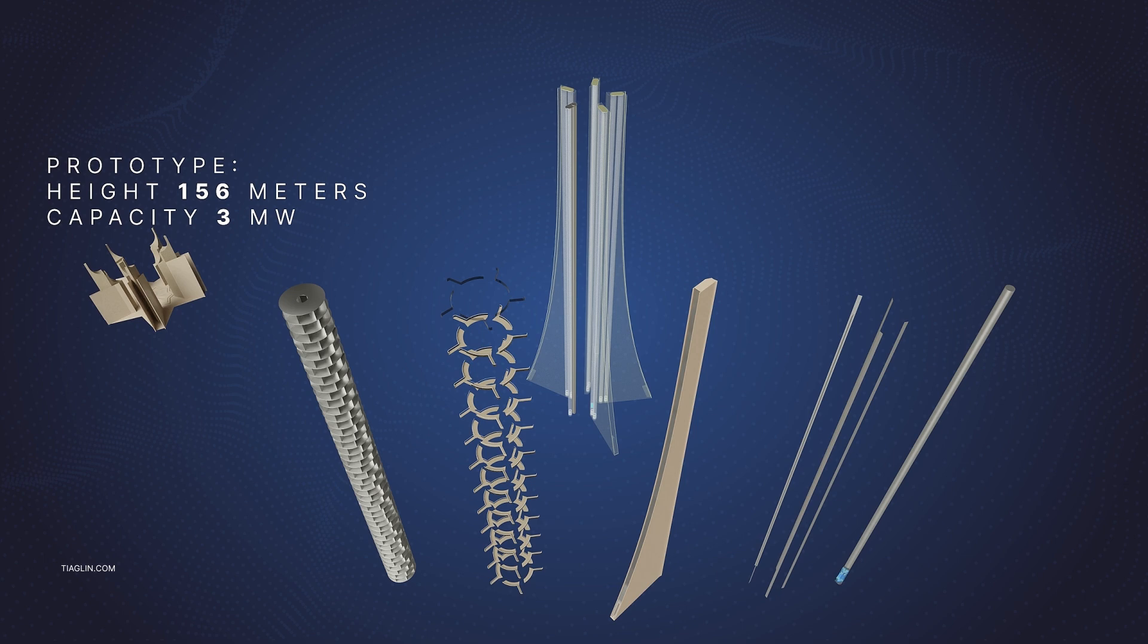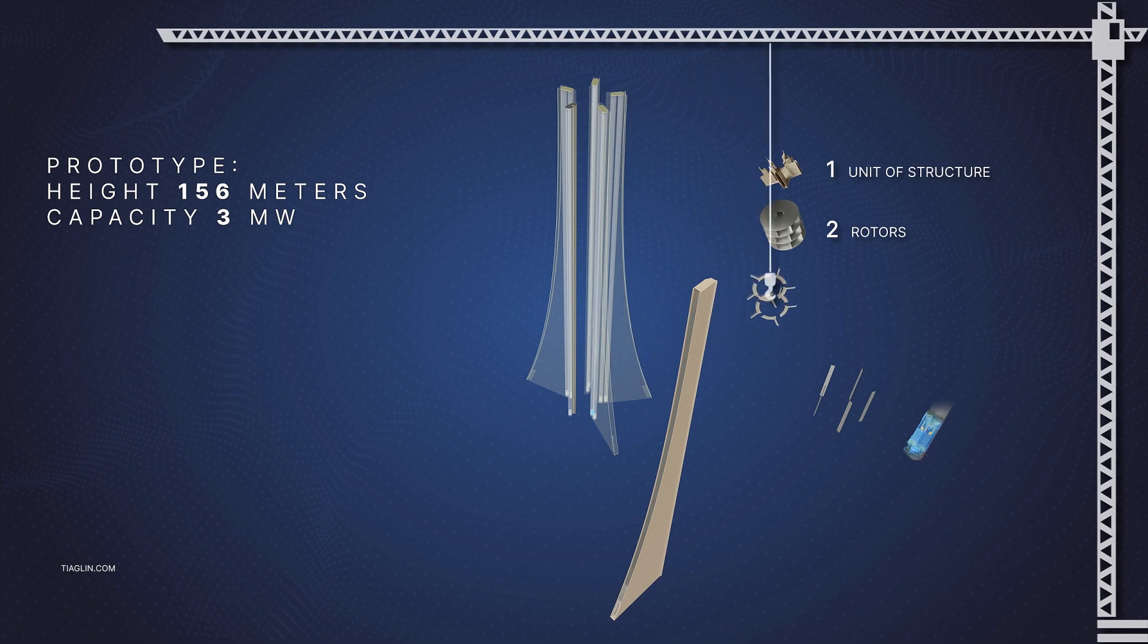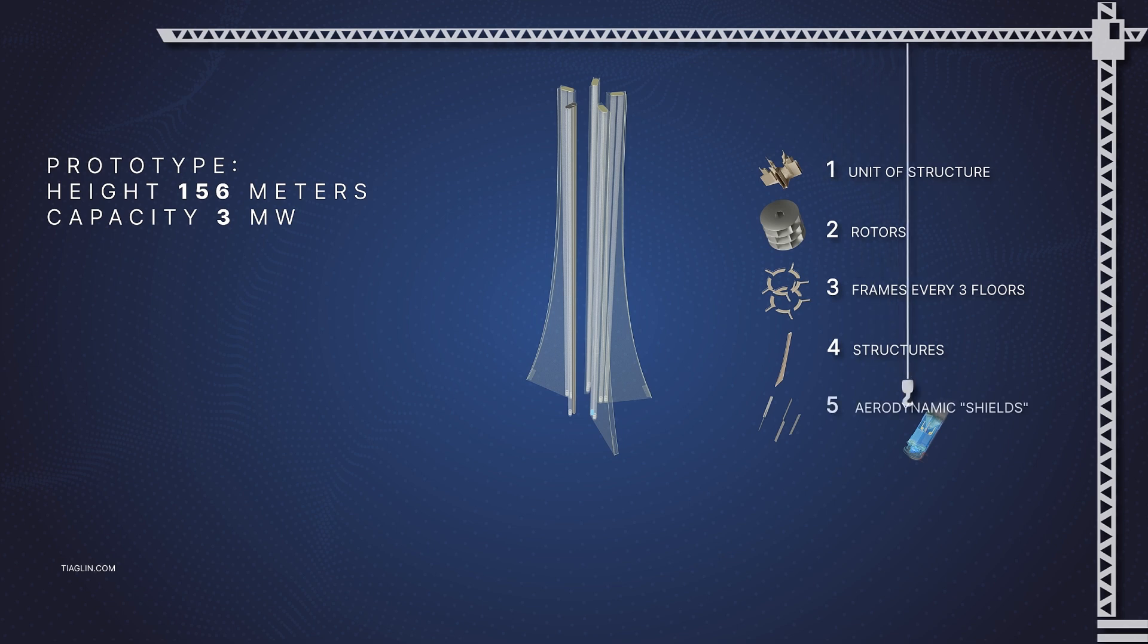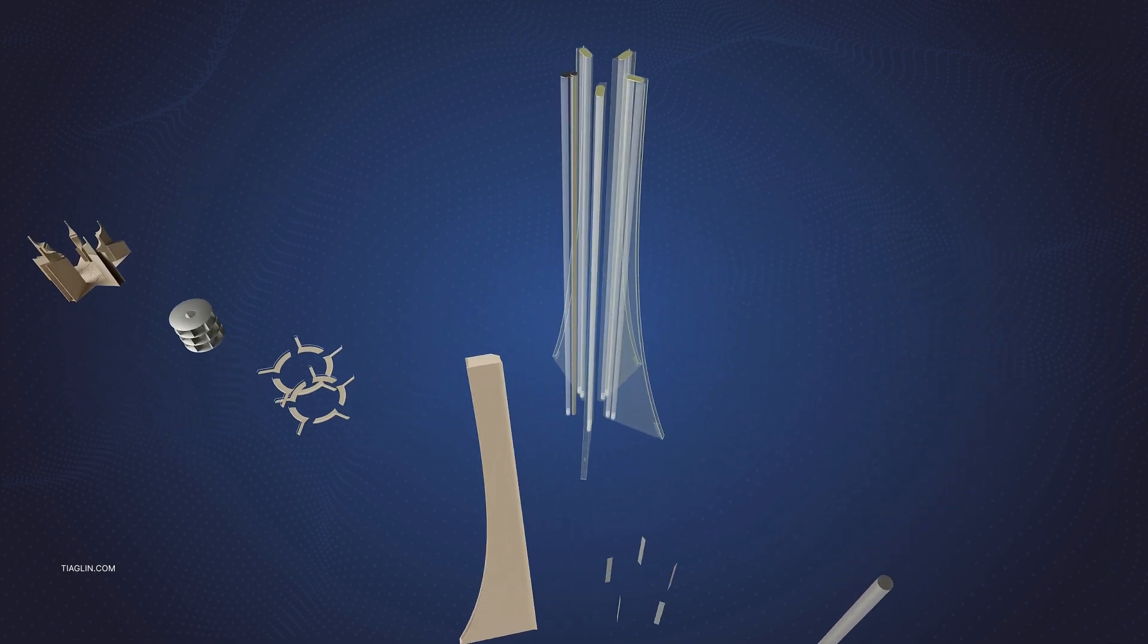The claimed technical solution relates to the field of energy, in particular to hydropower plants, and can be used to generate electricity through the alternate use of gravity and the strength of Archimedes. Voda hydropower plants are located inside the frame of buildings. Let's consider the principle of operation as well as what the installation consists of.